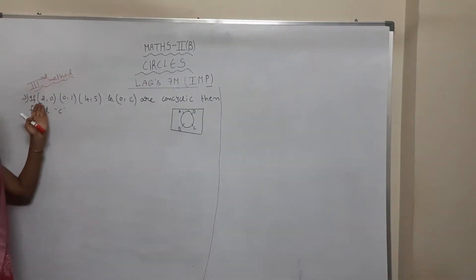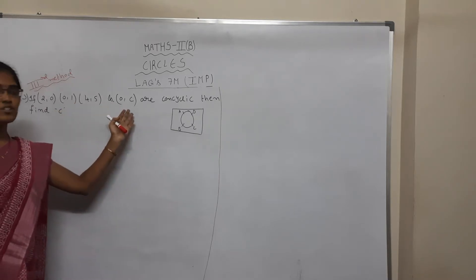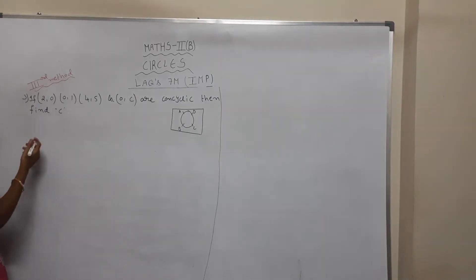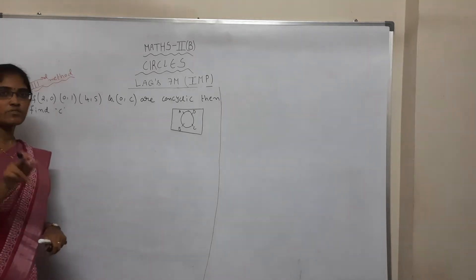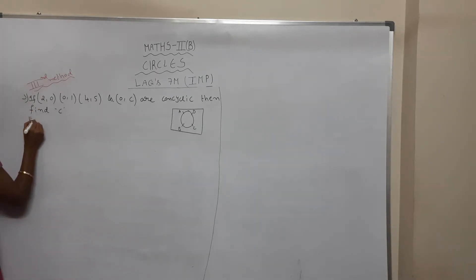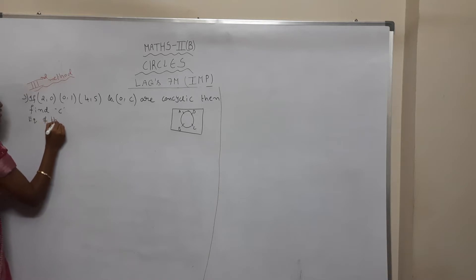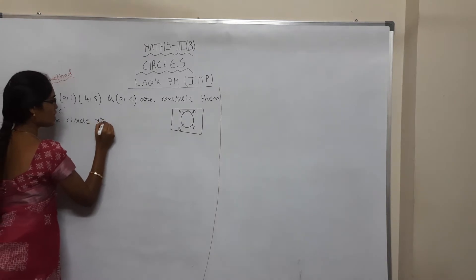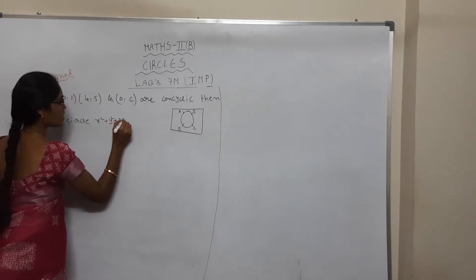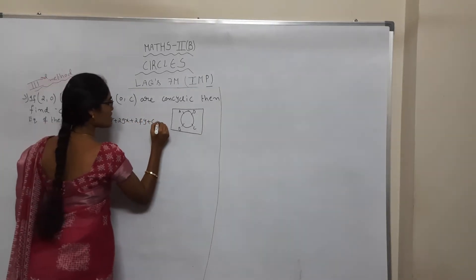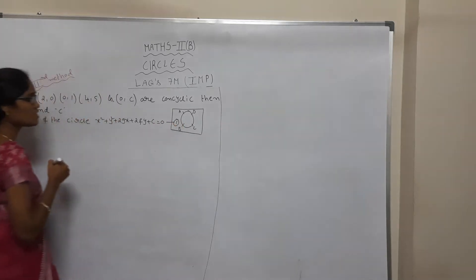The given points are (2,0), (0,1), (4,5), and (0,C). If they are Concyclic, find C. We use three points in the circle equation to find out. The equation of the circle is: x² + y² + 2Gx + 2Fy + C = 0. Consider this as Equation 1.